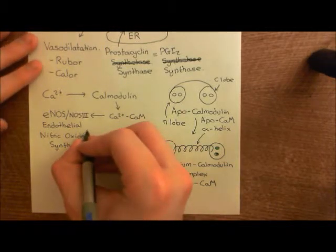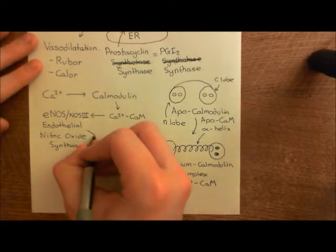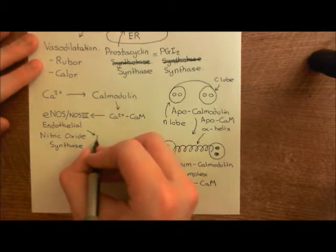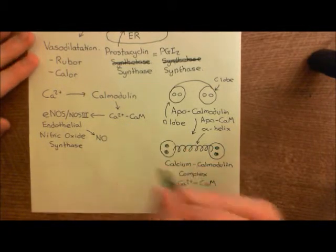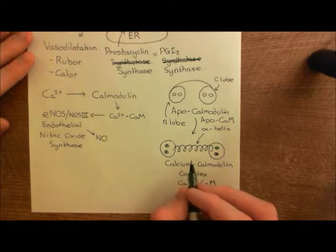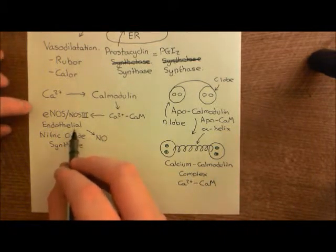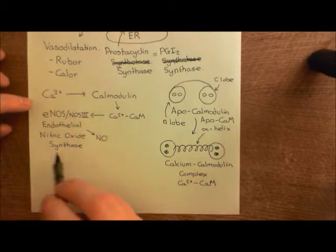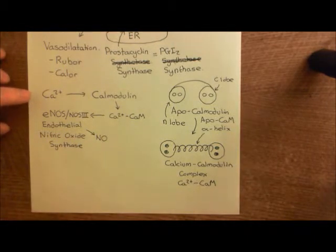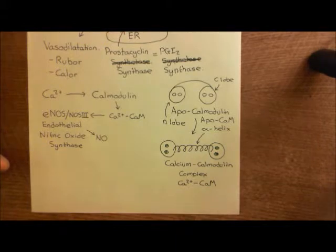So eNOS is going to start producing nitric oxide when you activate it by binding calcium-calmodulin complexes to it. So two calcium-calmodulin complexes will bind to the eNOS enzyme, which is actually a dimer of two eNOS proteins. And those eNOS proteins will now start producing nitric oxide.